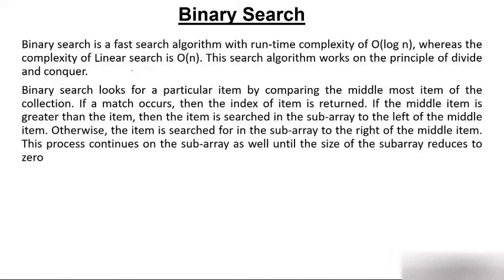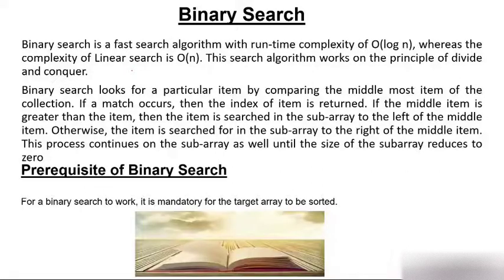Binary search looks for a particular item by comparing the middle-most item of the collection. If the match occurs, then the index of the item is returned. Let me show you the example of a book.